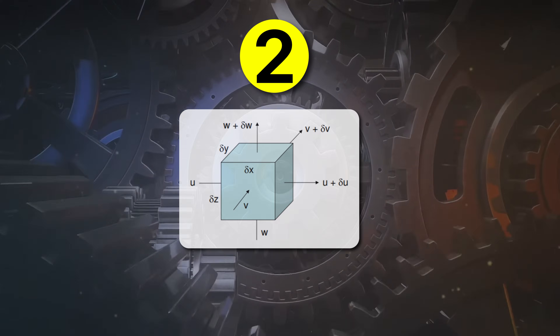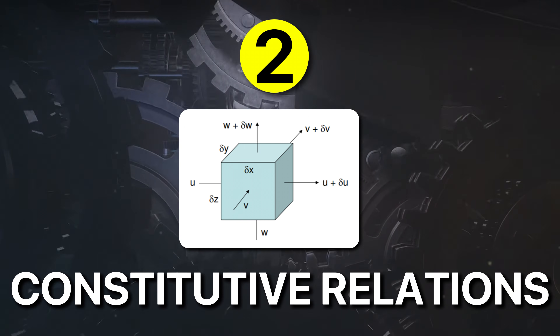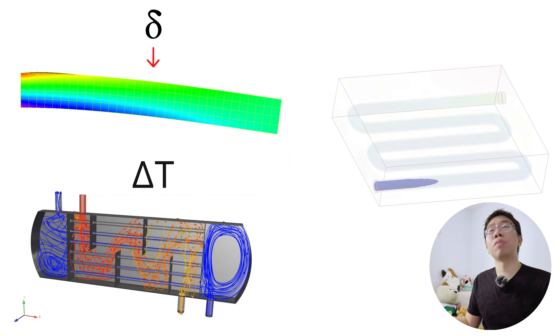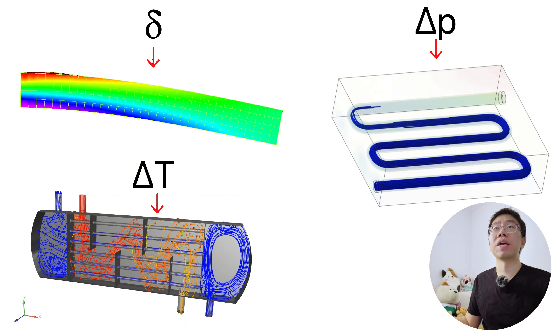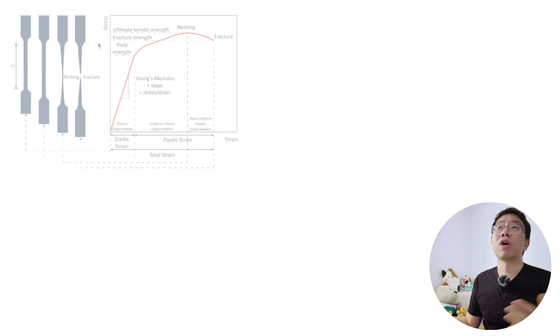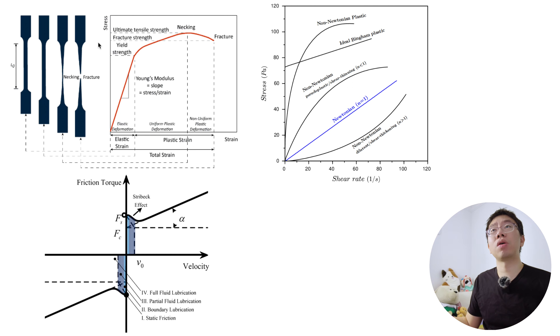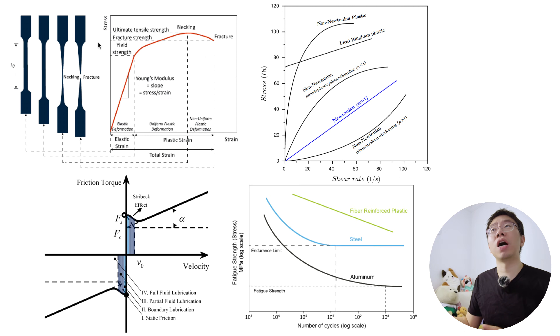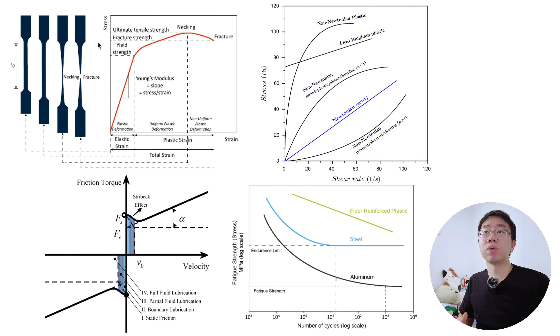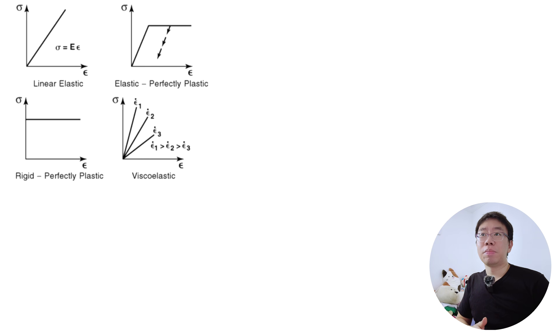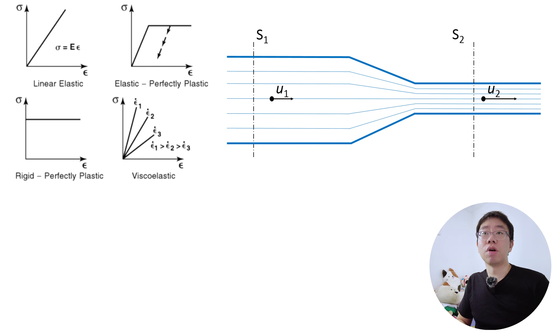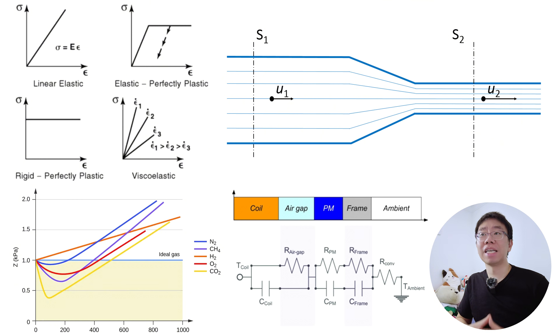Now balance equations alone are not enough. They tell you what must be conserved, but not how a system responds. That response is defined by constitutive relationships. A constitutive relationship describes how a material or system responds to loads, deformation, temperature, or flow. Stress strain laws, viscosity models, friction models, and fatigue curves are all constitutive relationships. Every mechanical engineering analysis closes the balance equations with constitutive assumptions. Linear elasticity, plasticity, compressible flow, ideal gas behavior, and lumped thermal capacitance are not laws of nature, but rather modeling choices.